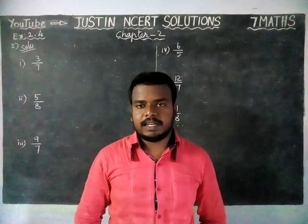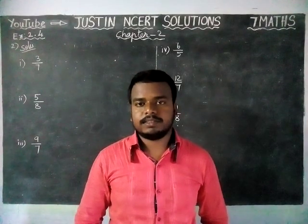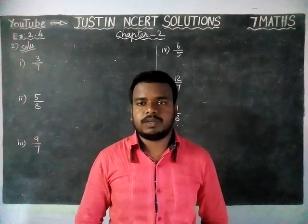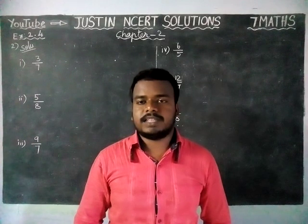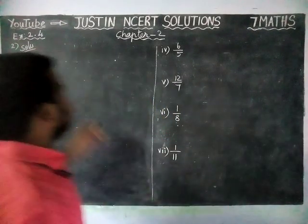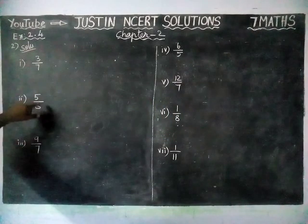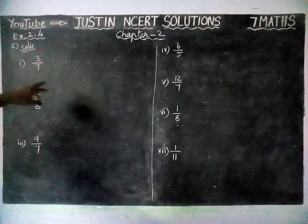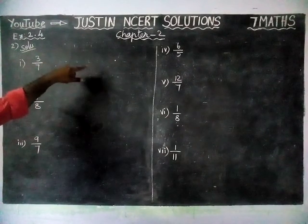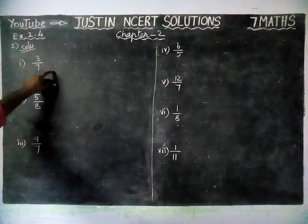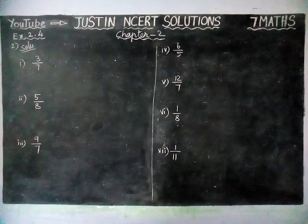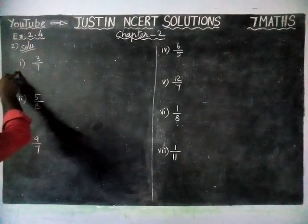Hi students, welcome to Justine's NCRT Solutions. In this video, we are going to see Class 7 Maths Chapter 2, Exercise 2.4, Second Question. They have given some fractions. We have to find the reciprocal of the given fraction, and we have to find whether it is improper, proper, or a whole number. Now we are going to start with the first sum.